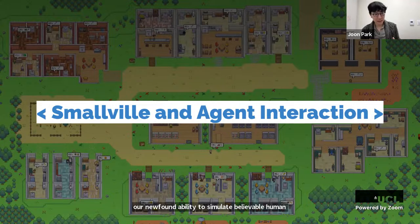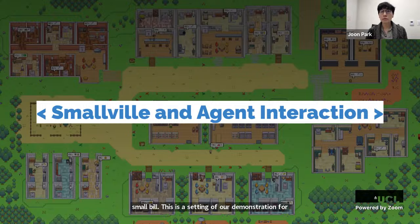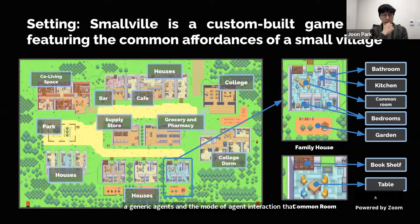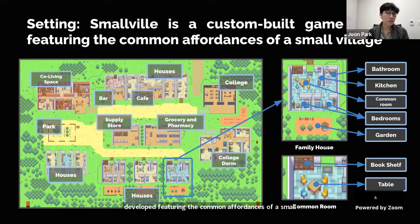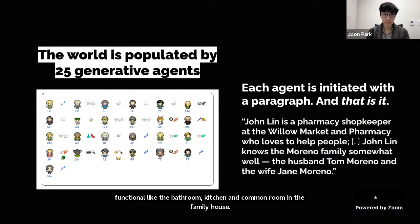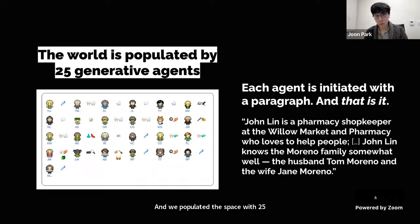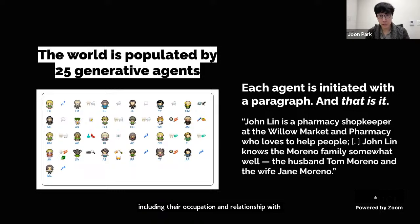Let me demonstrate Smallville, the setting of our demonstration. Smallville is a sandbox game environment featuring the common affordances of a small village — houses, apartments, cafes, bars, schools, stores, and sub-areas like bathrooms, kitchens, and common rooms. We populated the space with 25 agents and initialized each with one paragraph of natural language description depicting each agent's identity, including their occupation and relationships with other agents, seeded into the agent's memory at the start of the simulation.